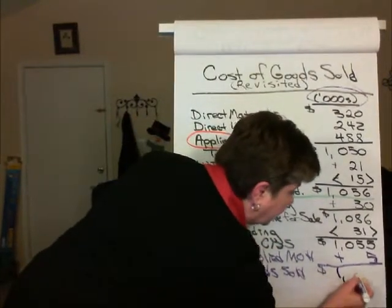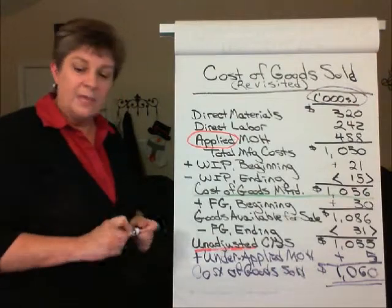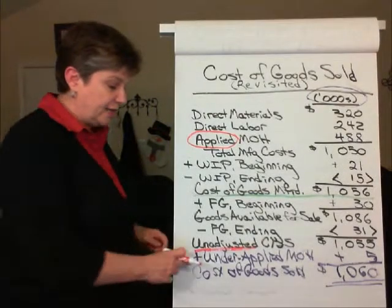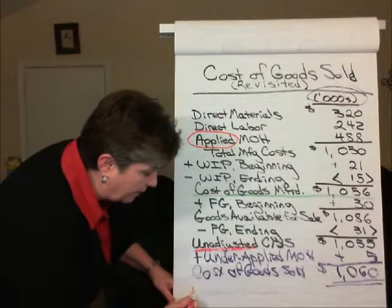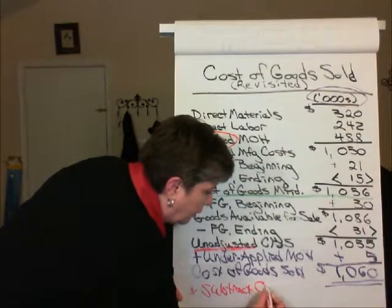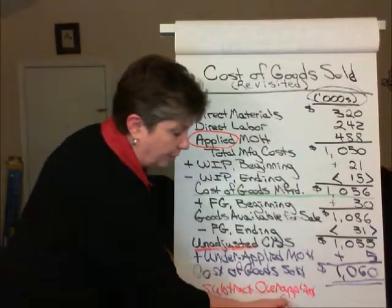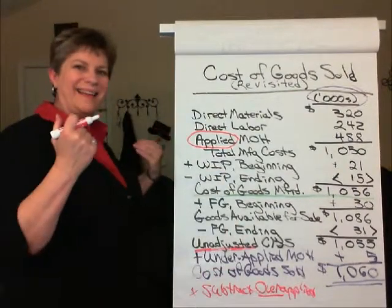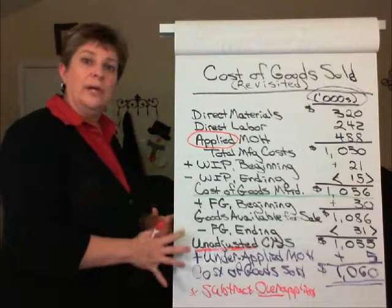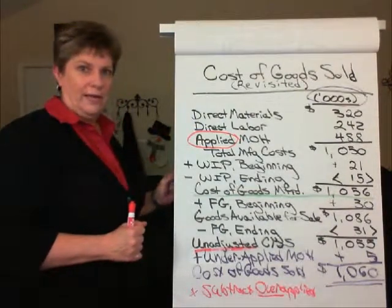Our adjusted Cost of Goods Sold is $1,060,000, and that's the amount that will go to the Income Statement. Also note, if this had been overapplied manufacturing overhead instead of underapplied, we do the opposite — we would subtract overapplied overhead, because in that case we would have charged too much to work in process and in turn to Cost of Goods Sold. So we'd have to back that difference out of the Unadjusted Cost of Goods Sold. That's how we deal with over or underapplied overhead that results from the difference between estimated overhead and actual overhead costs incurred during the period.